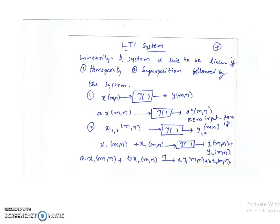What is linearity? A system is said to be linear if it obeys two properties: homogeneity and superposition. Homogeneity means if input x(n) produces output y(n), then scaling the input by a factor 'a' should produce output a·y(n). In particular, if a equals 0, the input is 0 and the output should also be 0. So homogeneity implies zero input produces zero output.